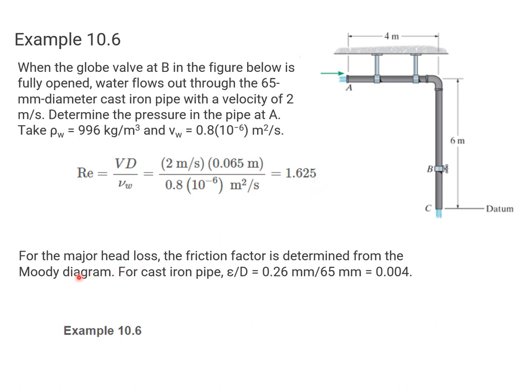For this case, we can use the Moody diagram. For cast iron pipe, the relative roughness is 0.26 millimeters. We divide that by 65 millimeters and get 0.004.